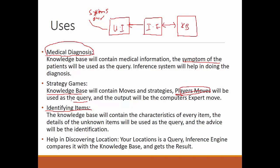Identifying items. For example, if we have to identify between animate or inanimate objects or between various animals, like we are not able to discern which animals fall in a particular or specific category. For that case also, we can use expert systems. The characteristics of every item or animal are stored in the knowledge base. The details of the unknown items will be used as a query and the advice will be the identification. So it will identify, that's the result we want.